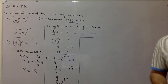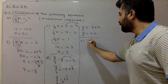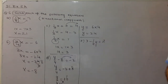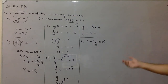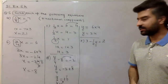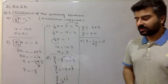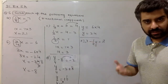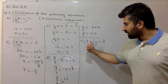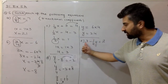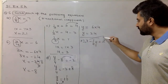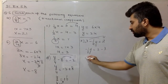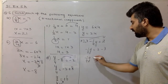Part E is: 3 minus 1 over 4y is equal to 2. The sign always comes before the number — this minus belongs to 1 over 4, so 3 has a positive sign. Shift this 3 to the right side of the equation. You will have minus 1 over 4y equal to 2 minus 3, so minus 1 over 4y equals minus 1.